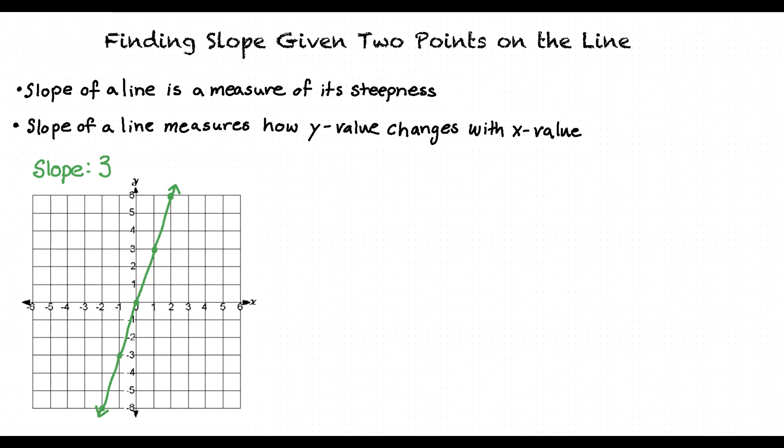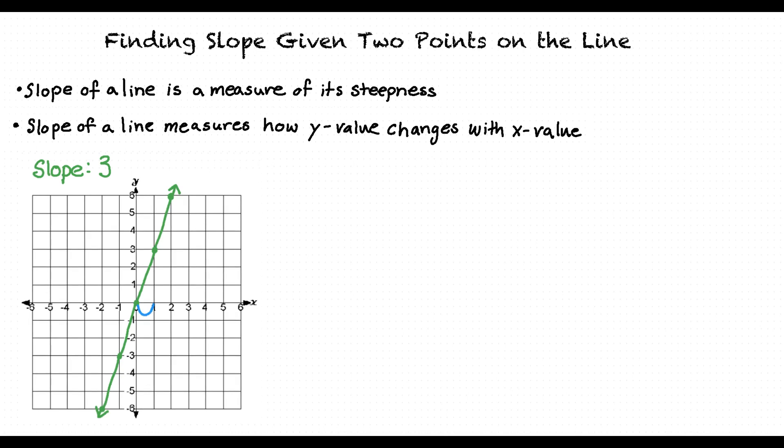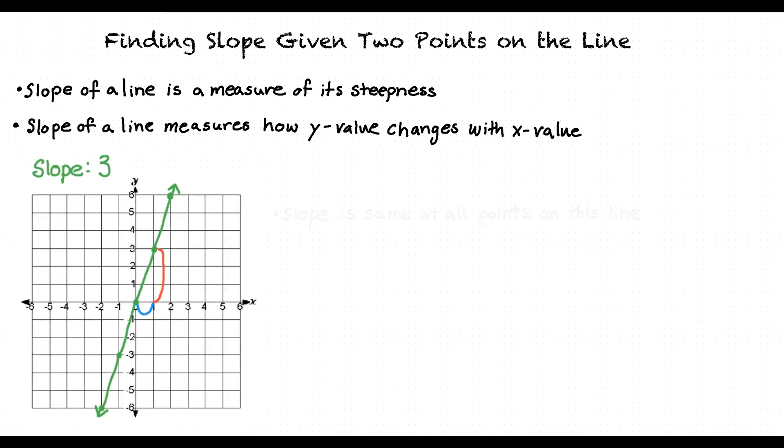We can tell that this line has a slope of 3 because with an increase of 1 on the x-axis, the y-value increases by 3. This is so for all points on the line.